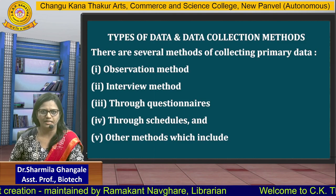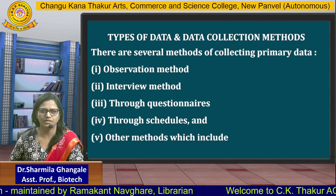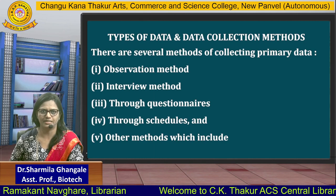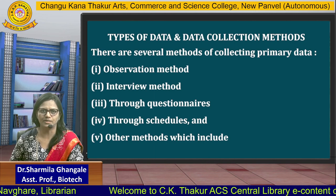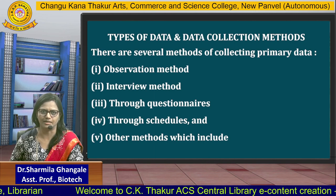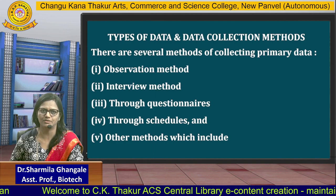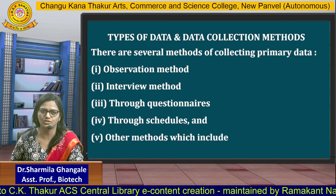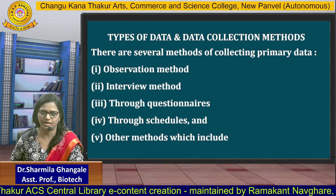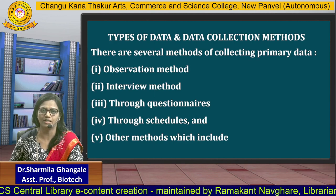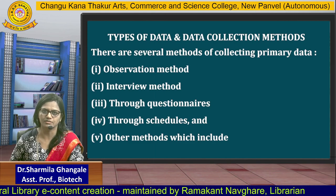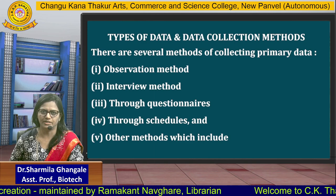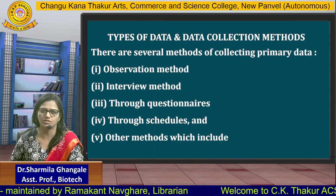Hello friends, welcome again in the next session. In the previous session we discussed about the types of data and data collection methods. We have seen that there are two types of data: primary data and secondary data. Primary data is that data which is collected afresh for the first time by the researcher, while secondary data is published and available on Google or other websites. These are the two types of data usually used for research work.